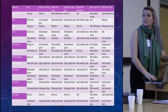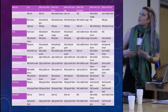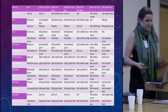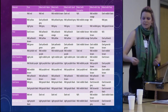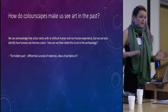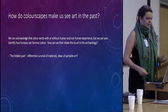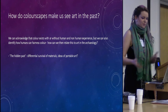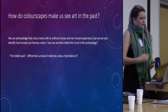It was really interesting actually. It showed me that burning aspects like hematite produces very, very little difference, but mixing it with peat produces this vastly darker colour. Moving swiftly on — how do colourscapes make us see art in the past? Because this session is about art. We need to acknowledge that colour exists without human or non-human experience; it's just there. Whether you engage with it or not is a different thing.